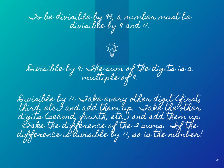It's important to note that to be divisible by 99, a number has to be divisible by both 9 and 11. And our divisibility rule for 9 is that the sum of digits is a multiple of 9.